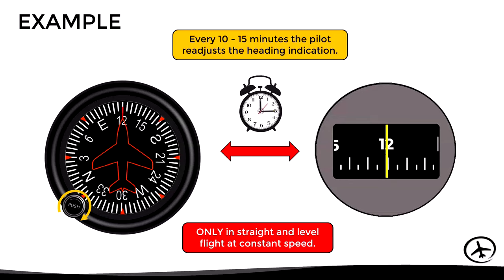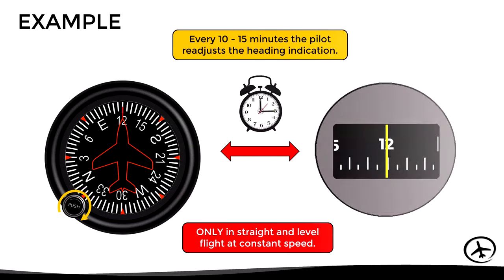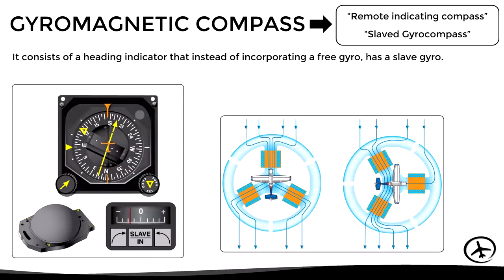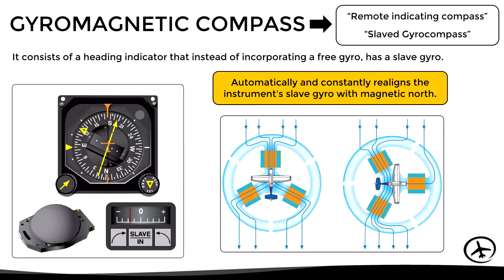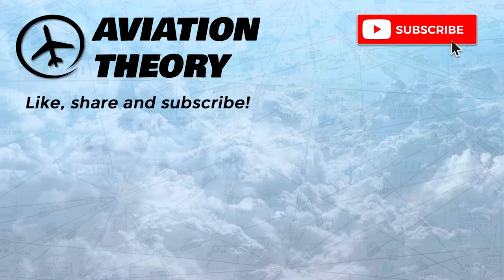There is a variant of the heading indicator known as the gyro magnetic compass, also called the remote indicating compass or slave gyro compass. Instead of incorporating a free gyro, it uses a system of remote magnetometers to determine the direction of magnetic north, automatically and constantly realigning the instrument's slave gyro with magnetic north. This instrument will be covered in detail in another video. If this information was useful, don't forget to share, like, subscribe, and leave a comment below.